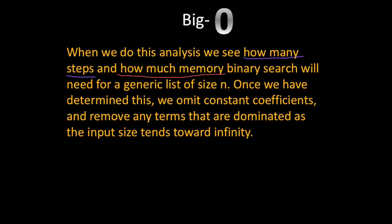After we've removed constant coefficients we remove any terms that are dominated as the input size tends toward infinity. Now dominated means that if you keep on plugging bigger and bigger values for n you see which of the terms gets larger at a faster rate.